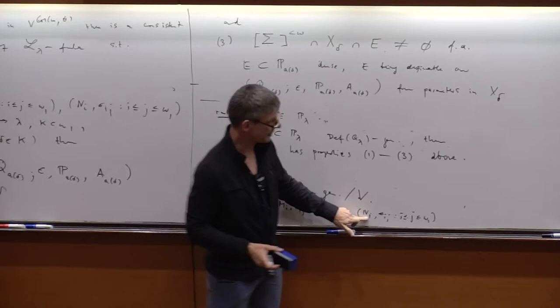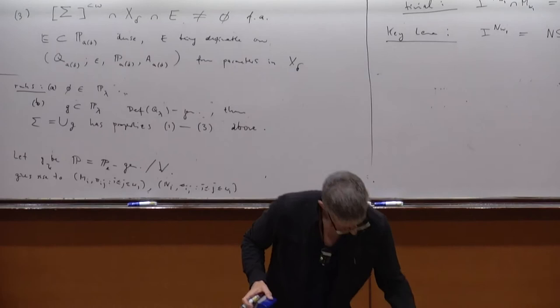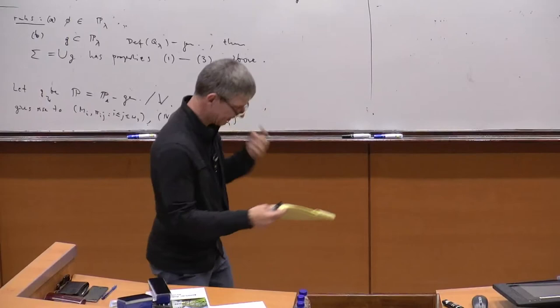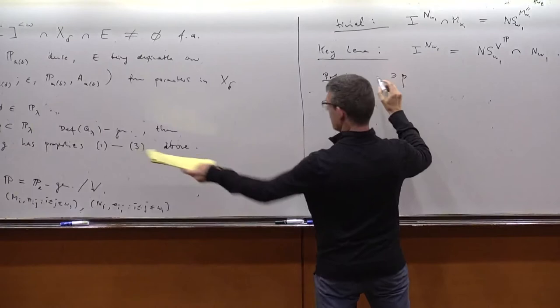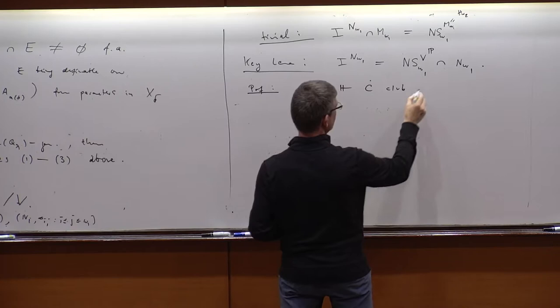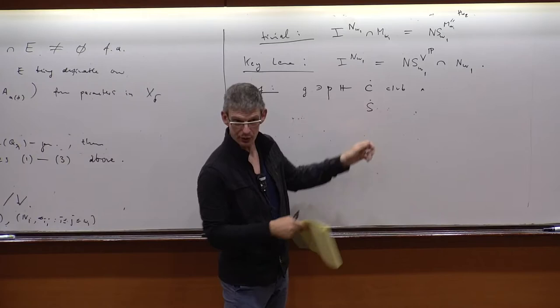The key lemma is the non-trivial direction: if you look at the designated ideal of the last model N_{ω₁} from the n-iteration — which is outside V — and restrict it to N_{ω₁}, then this is just the non-stationary ideal of the forcing extension intersected with N_{ω₁}. If you can prove this you also prove that the forcing preserves stationary sets by that line. So you want to show that the ideal of the last model from this iteration is simply the non-stationary ideal of the forcing extension restricted to the model.